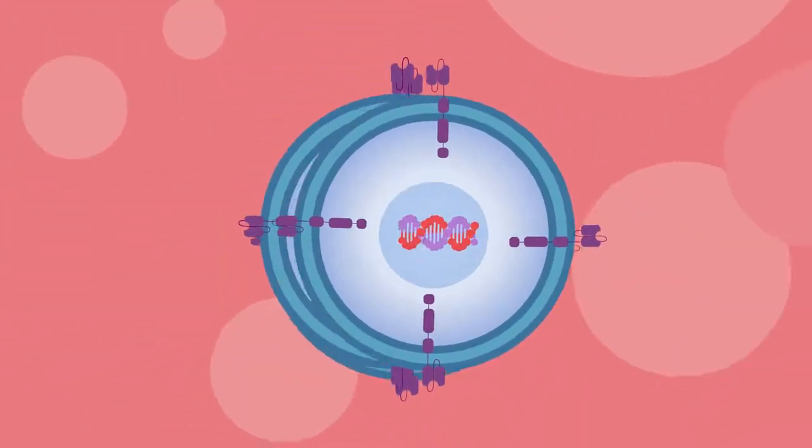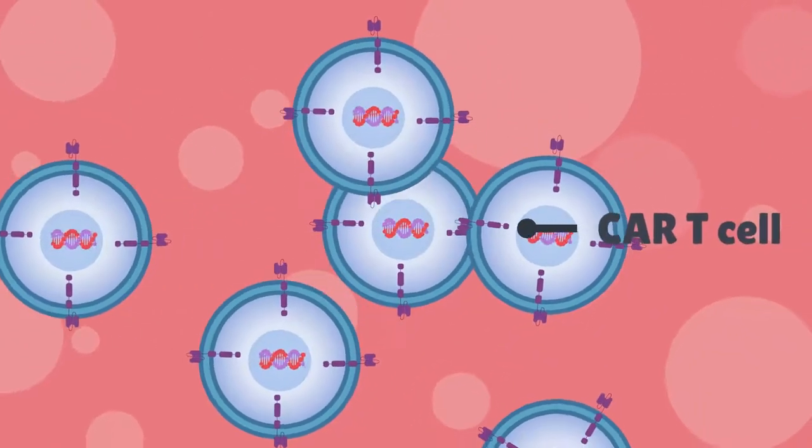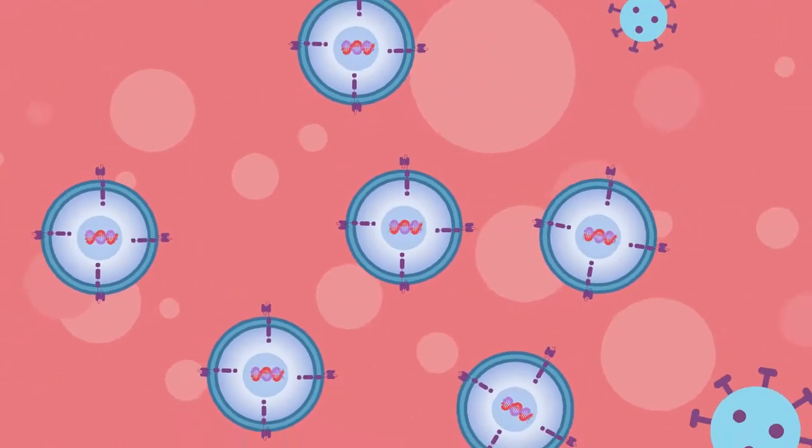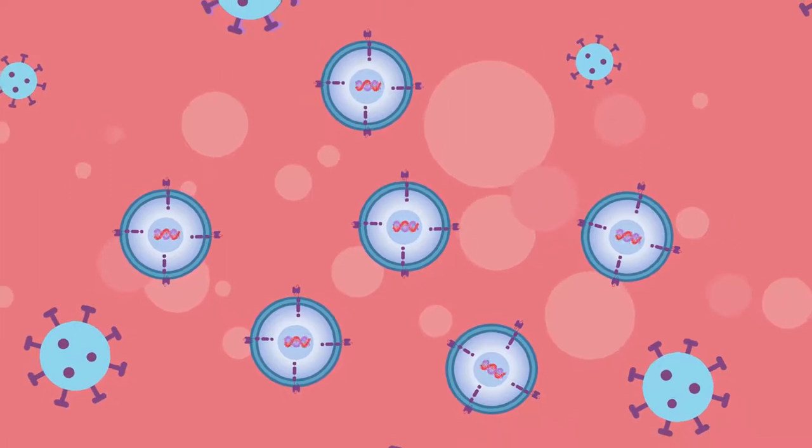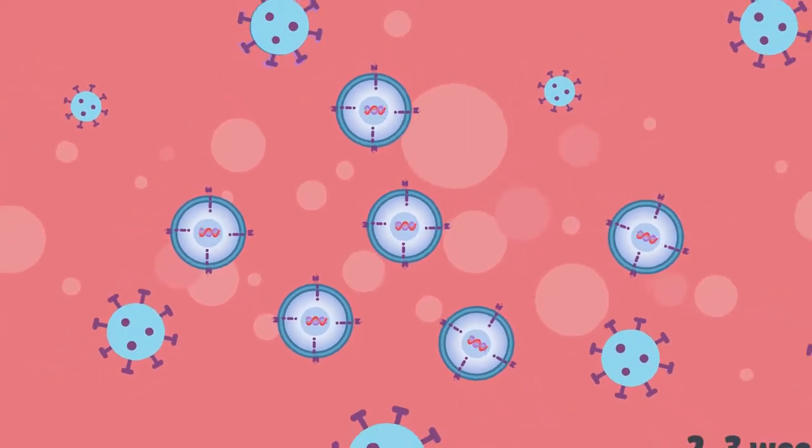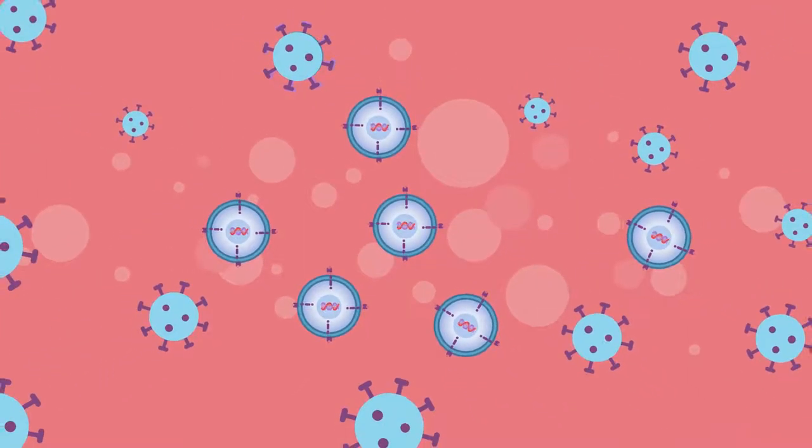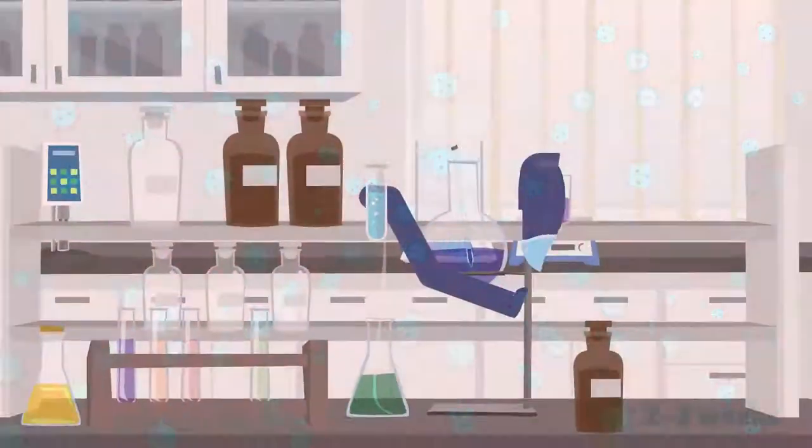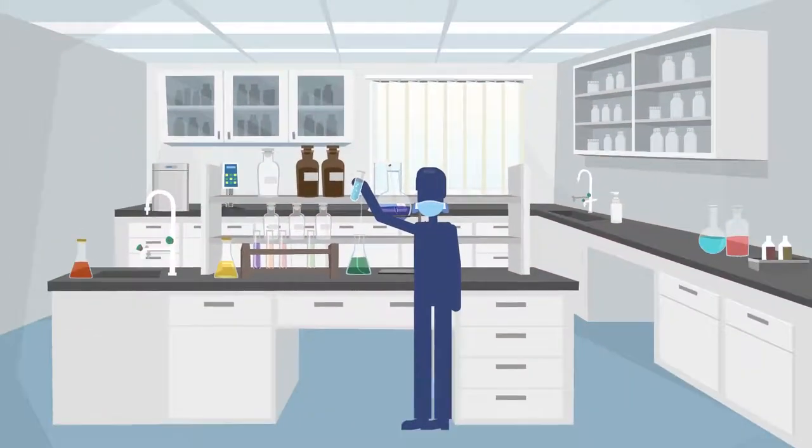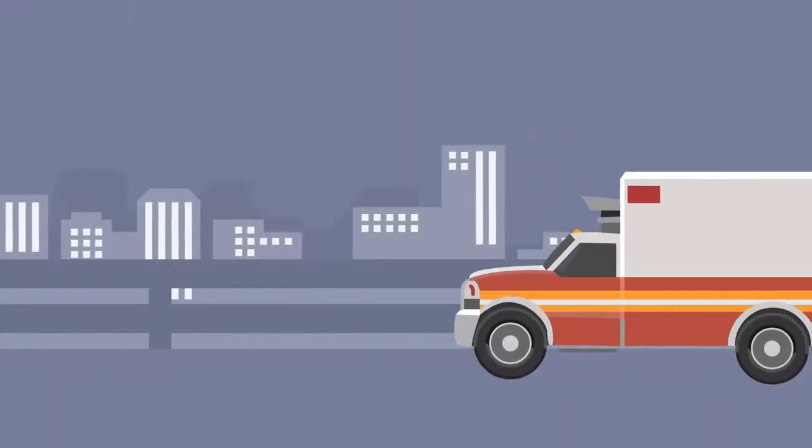The genetically modified T-cells are expanded by growing cells in a laboratory until there are millions of them. This process can take two to three weeks and involves a phase of rigorous quality testing. The bulk CAR T-cells are frozen and transported back to the treating facility.